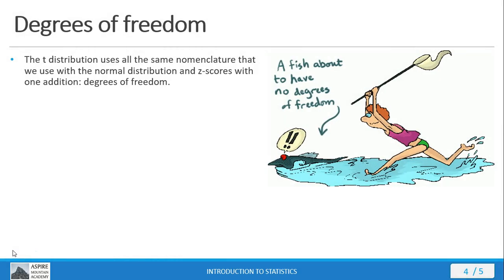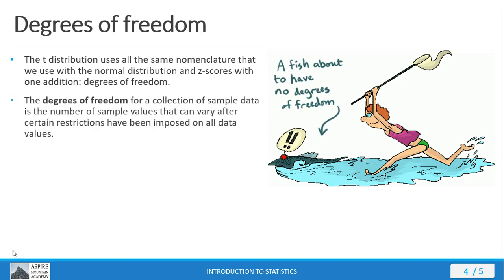There's an added element here with the student t-distribution that we call degrees of freedom. The reason why you're seeing different shapes and different sizes of the student t-distribution with different sample sizes is because of this concept known as degrees of freedom. Degrees of freedom is simply the number of sample values that can vary after certain restrictions have been imposed on all data values.